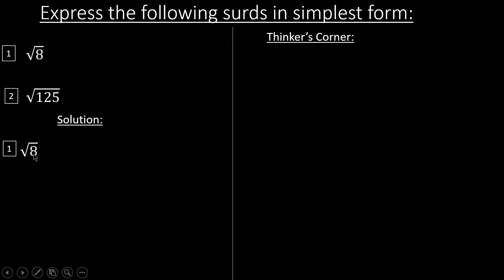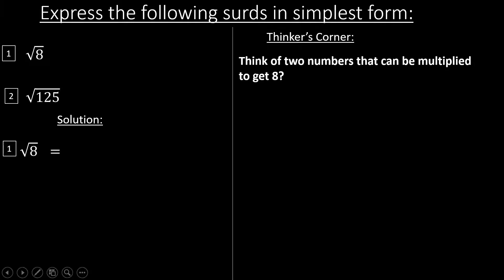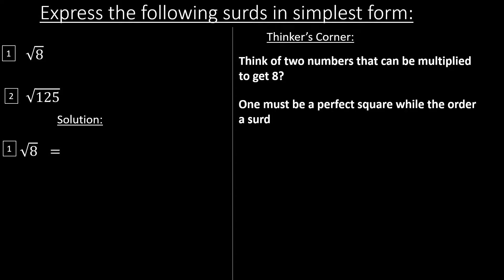We start with the first one: root 8. How can I simplify root 8 into its simplest surd? Step one: think of two numbers that can be multiplied to get it. You must think of any two numbers that you can multiply to get it. Step two: one of those numbers must be a perfect square.